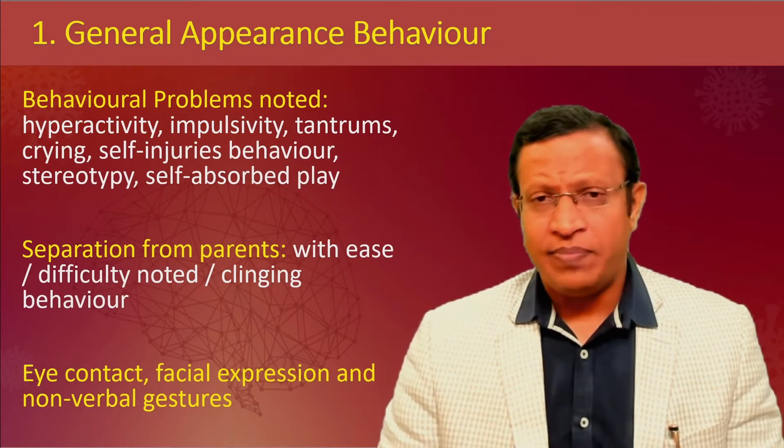Assess cognitive function with regard to intelligence, general fund of information, and comprehension, depending on the child's age. For children aged 4 to 6, ask about body parts, naming, colors, and objects; simple calculations can also be done. In adolescents, testing can approach adult-level assessment. For judgment, use hypothetical testing. For insight, assess whether the child is aware of their problems, what they attribute them to, and whether they are willing to accept treatment.